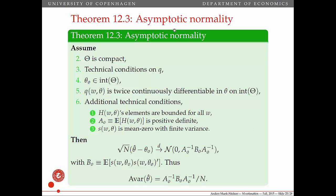This A naught is, as defined earlier, the expected Hessian. So the variance comes from the expected Hessian and the expected outer product of the scores — that's super important. Here's the theorem: we assume compactness of the parameter space, we have some technical conditions on Q, we assume the true parameter lies in the interior so that the first order conditions work, we assume Q is twice continuously differentiable in theta so that we can have the Hessian and the scores, the Hessian's elements are bounded, A naught is positive definite so we can invert it, and the scores have mean zero with finite variance B naught. If these conditions are met, our estimator is asymptotically normally distributed and this is how we estimate the asymptotic variance.